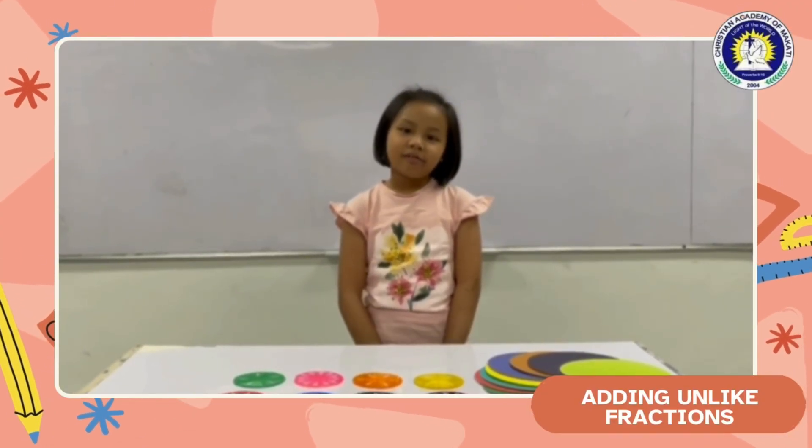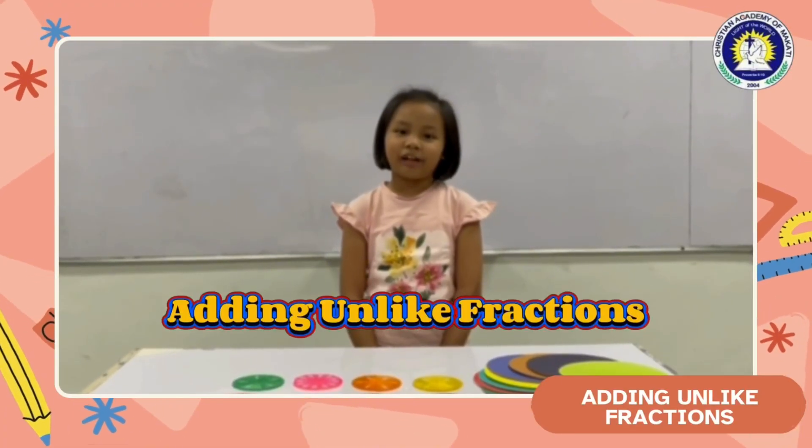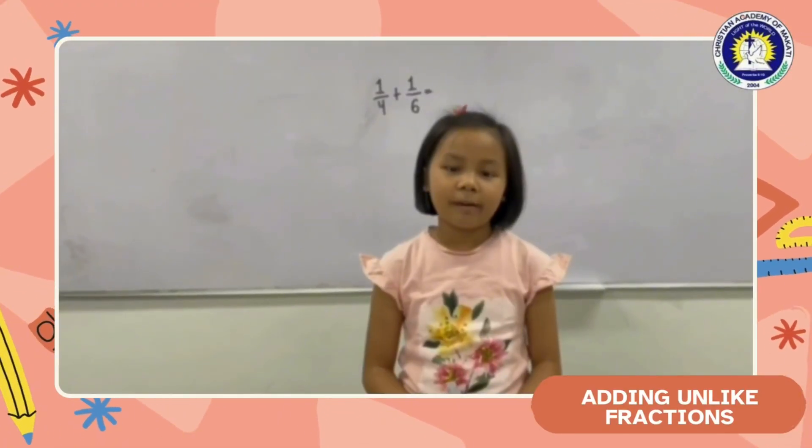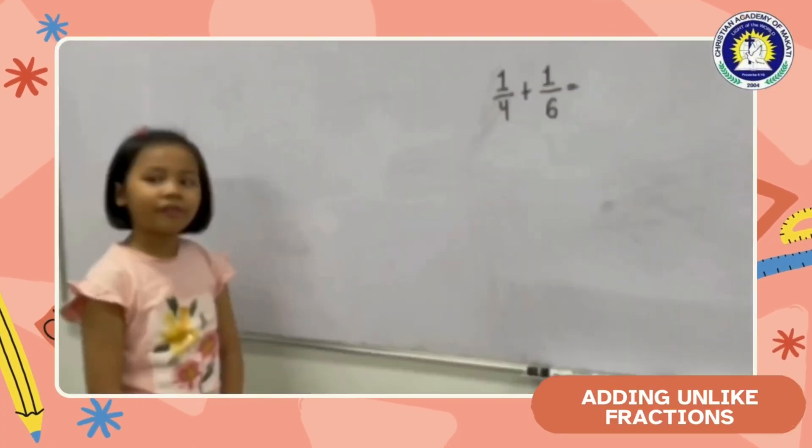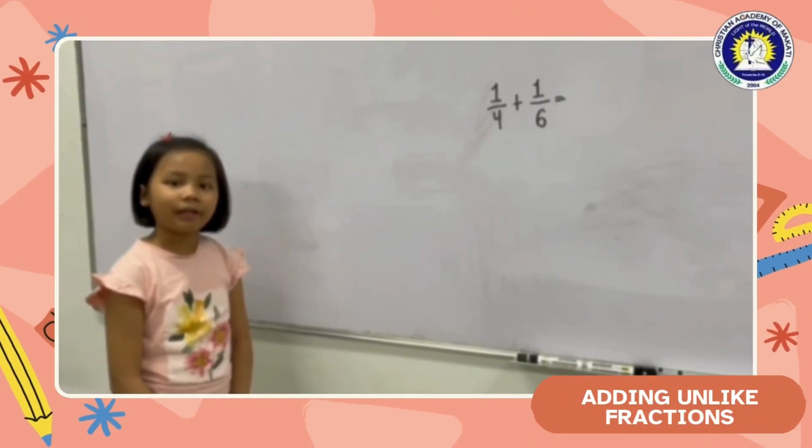And today, we will be learning on how to add unlike fractions. So the first step we have to do is find the least common multiple or LCM. To find the least common multiple, we need to skip count.